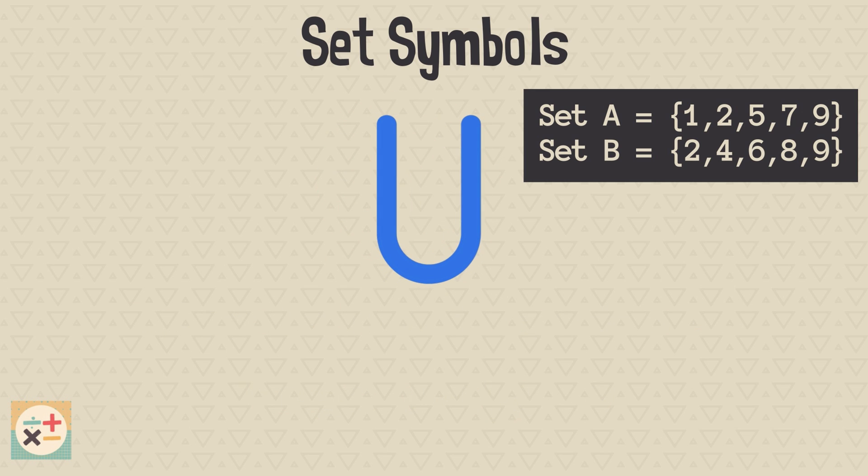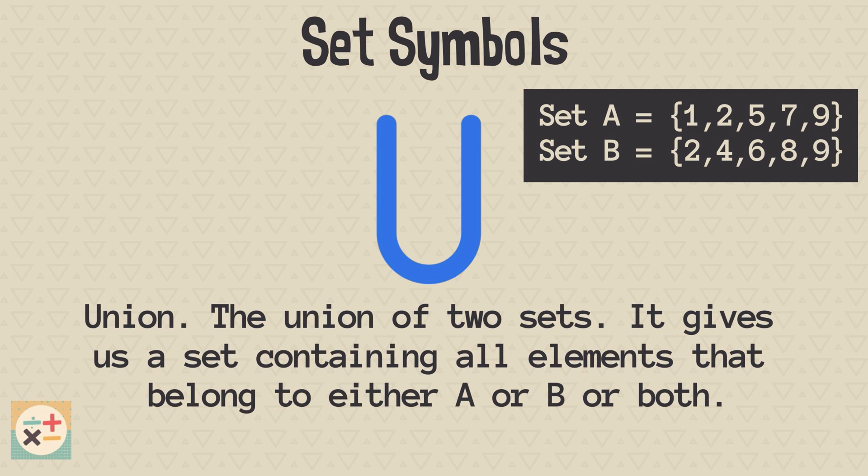This symbol represents the union of two sets. It gives us a set containing all elements that belong to either A, or B, or both. For example, this set is the union of A and B, as it contains some elements from set A, and some from set B.